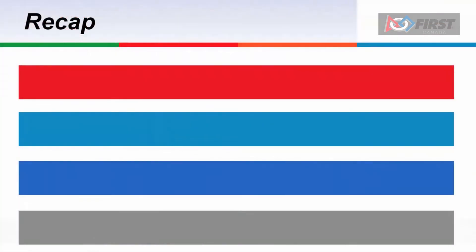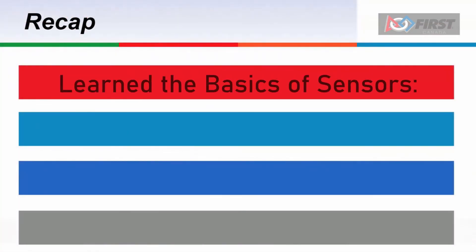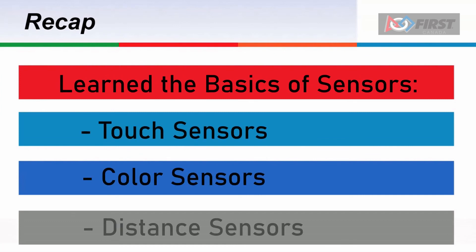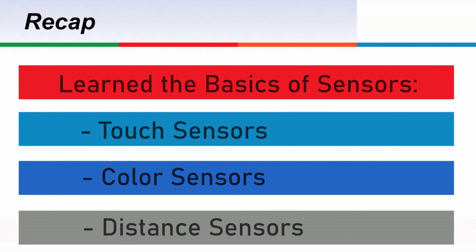Today, we covered the basics of sensors by controlling a touch, color, and distance sensor. Although they do have some applications in TeleOp, they're most useful in Autonomous, and by using the values you have accessed here, they can easily be applied elsewhere to create a better and more reliable autonomous routine.